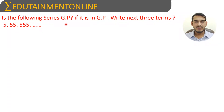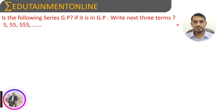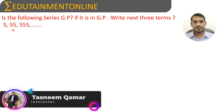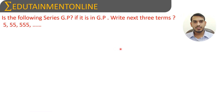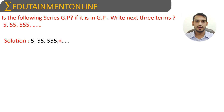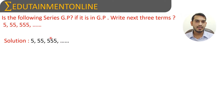Is the following series a geometric progression? If it is in geometric progression, write the next three terms. The given series is 5, 55, 555, and so on. To find if this series is in geometric progression or not, we need to find the ratio between the second term and the first term, and the ratio between the third term and the second term.